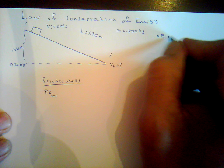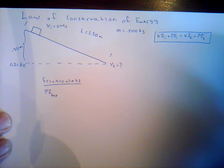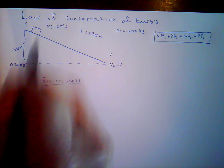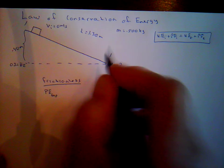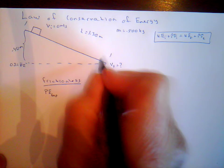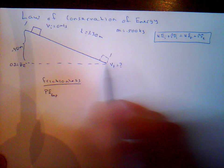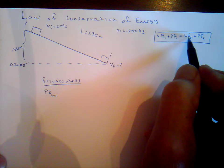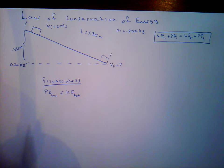So we solve: mgh at the top equals one-half mv² at the bottom. We can cancel mass from both sides. These are magnitudes only — energy is a scalar quantity, not a vector. So: 9.80 m/s² × 0.40 meters = one-half × v². You should do this calculation to verify. The final velocity at the bottom is 2.80 meters per second — this is for the frictionless case.